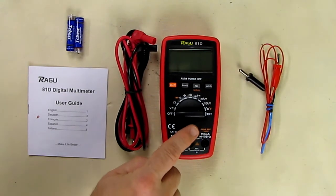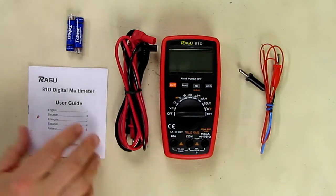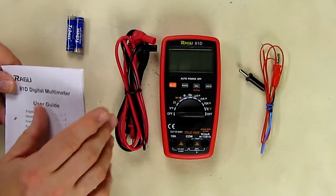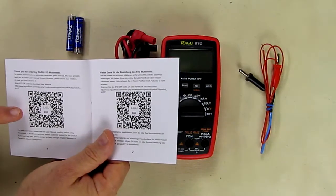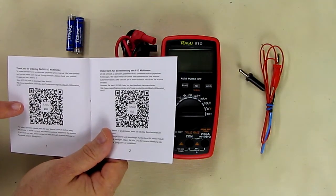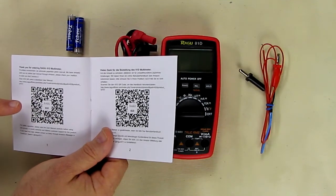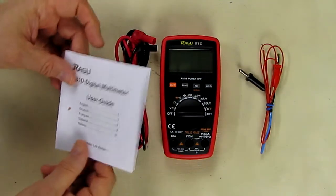There's also an internal thermistor on here I'm going to show you. Now to get the manual for this, they show one of these UPC codes you could scan but it doesn't work. You scan it, goes to a website, and you can't really get the manual for this.